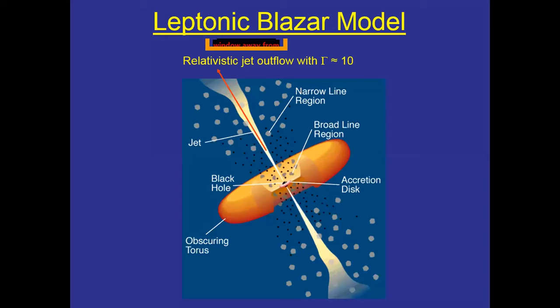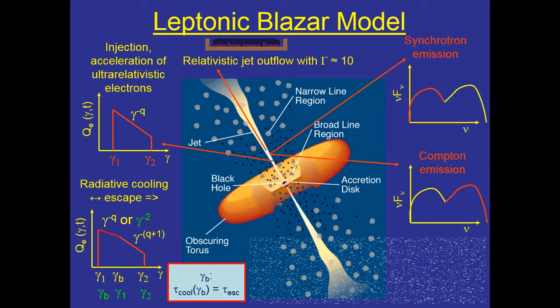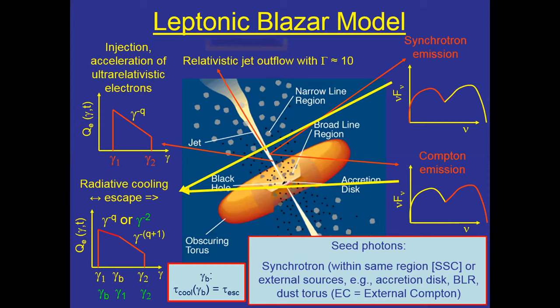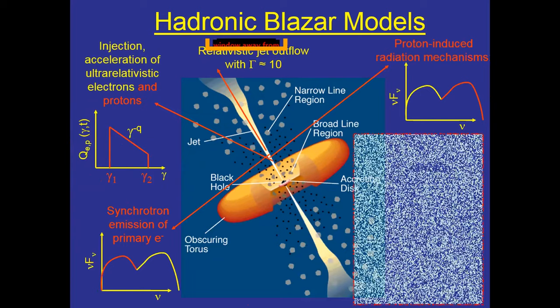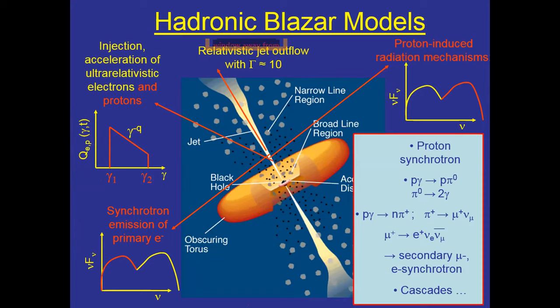I'll show examples of how multi-wavelength and high-energy polarimetry can help make progress. As a quick recap: high-energy emission can be produced by leptons — the same electrons that make lower-energy synchrotron emission — with X-rays and gamma rays produced by Compton scattering either of the synchrotron radiation, the co-moving synchrotron self-Compton, or by external sources such as accretion disk, broad-line region, or external Compton.